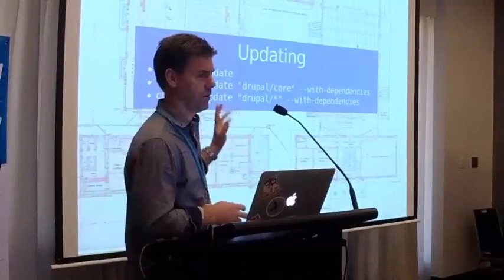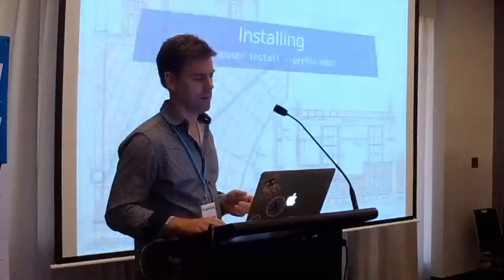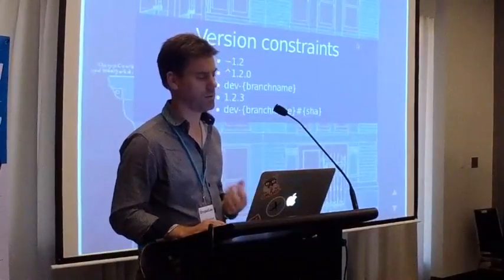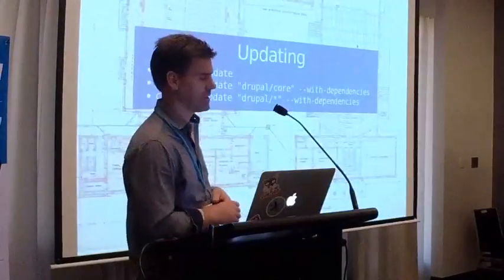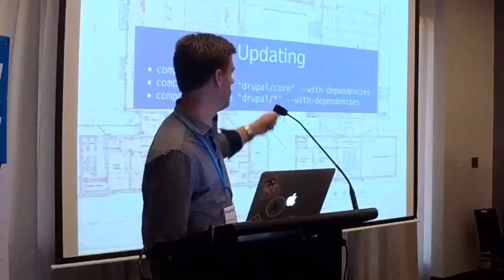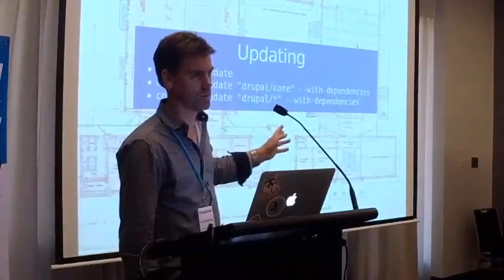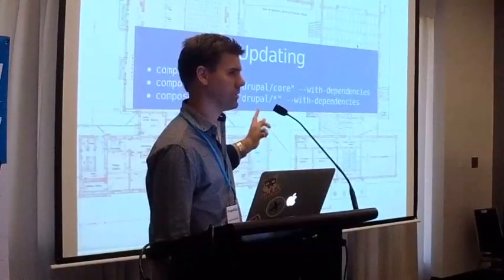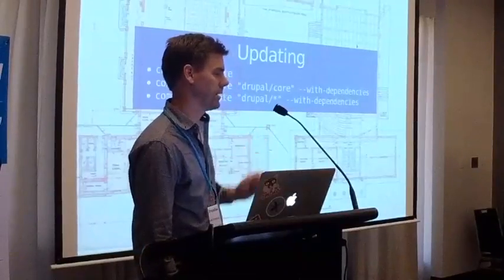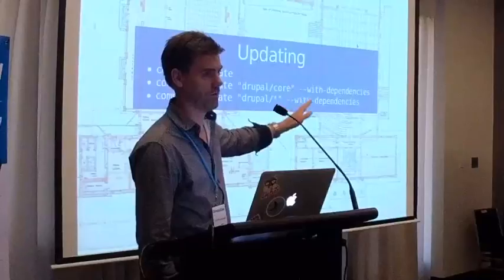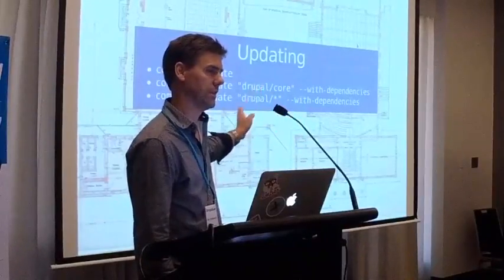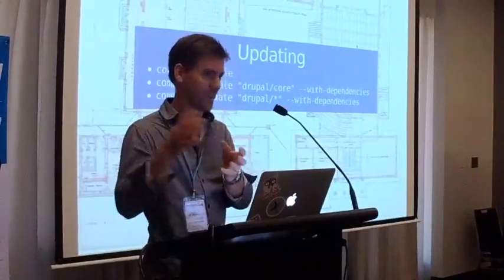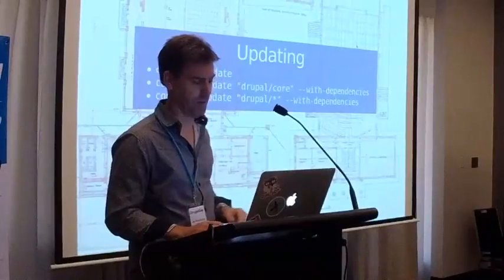When the time comes to update, you can run composer update and that will update everything in your project satisfying your version constraints. But you can be specific — you can say update everything in drupal/core, or drupal/* everything. You should always use --with-dependencies. I don't know why it's not the default, but for example when there was a security vulnerability in the Guzzle library, if you ran without --with-dependencies you wouldn't get the Guzzle update — you'd only get the latest Drupal. With-dependencies gets the composer.json from the update and gets updates for dependencies as well.